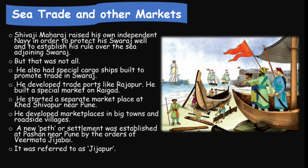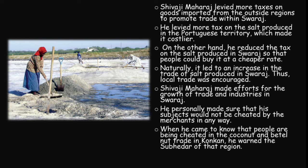Shivaji Maharaj levied more tax on goods imported from outside regions to promote trade within Swaraj. He levied more tax on the salt produced in the Portuguese territory, which made the coastal region more competitive. On the other hand, he reduced the tax on the salt produced in Swaraj so that the people could buy it at a cheaper rate.